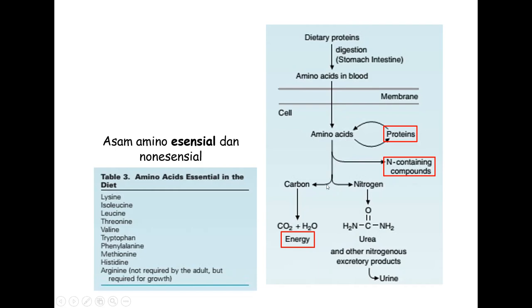Kalau nitrogen asam amino sudah tidak terpakai, tidak bisa dibuang dalam bentuk gas nitrogen. Berbeda dengan karbon pada gula atau lemak yang tidak mengandung nitrogen dan dibuang dalam bentuk karbon dioksida, asam amino mengandung nitrogen yang tidak bisa dibuang secara gas. Nitrogen asam amino akan diubah menjadi urea, kemudian urea disekresikan ke dalam urin dalam bentuk terlarut.